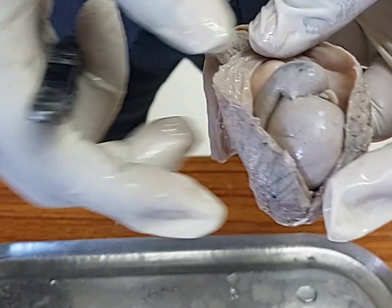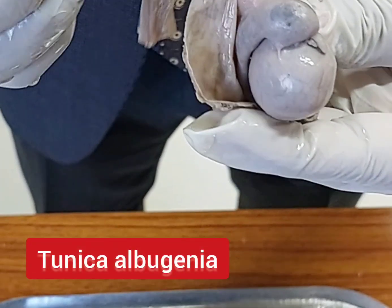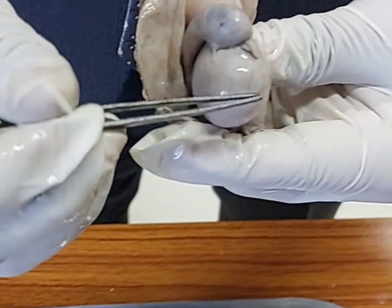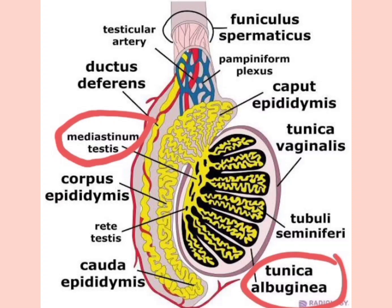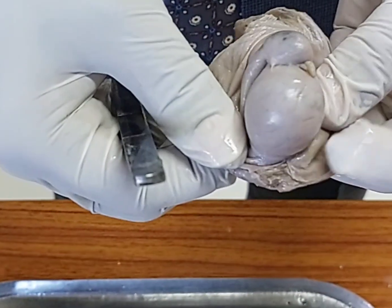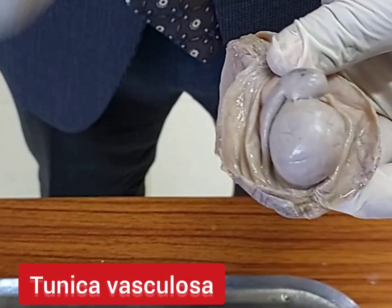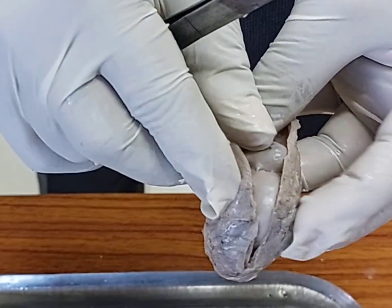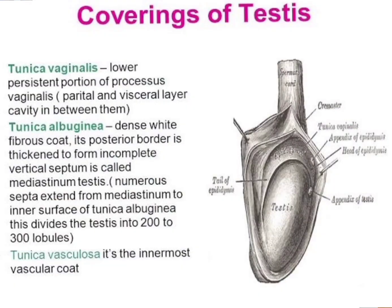The second layer is the Tunica albuginea. This layer enters the testis at the posterior border, forming the mediastinum testis. Deep to it is another vascular layer called Tunica vasculosa. So there are three coverings of the testis: Tunica vaginalis, which has two layers — visceral and parietal — then Tunica albuginea, which looks almost white ('albus' means white), and deep to it is the Tunica vasculosa, because it contains blood vessels.